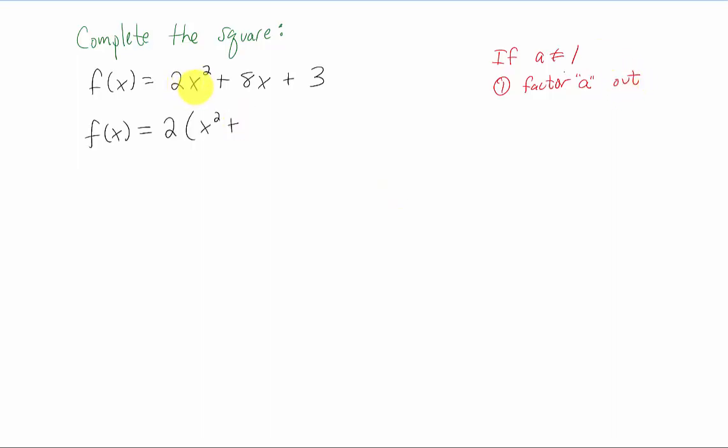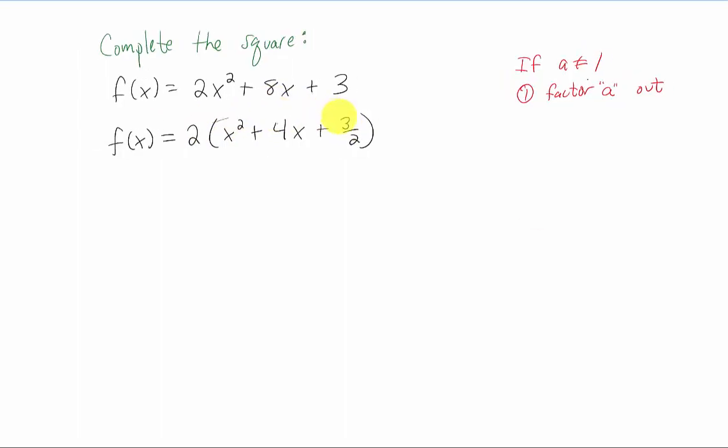So I'm going to factor a 2 out of this function, leaving us with x squared plus 4x, and this is a little bit tricky. We're going to be left with 3 halves over here. You can always check to see if you factored correctly by multiplying the 2 back through, and you can see that if you did multiply by 2 back through this polynomial, you would be left with what we started with. So that's our first step whenever a is not equal to 1.